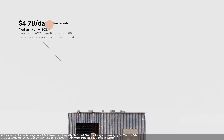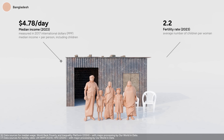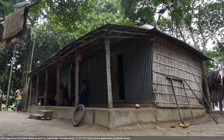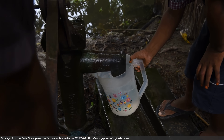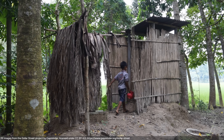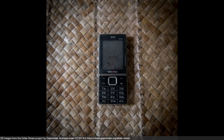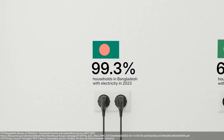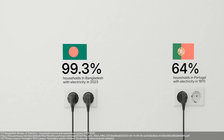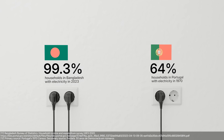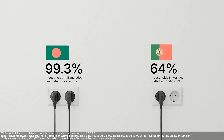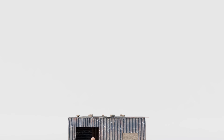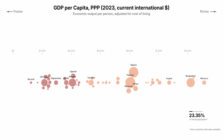Let's pick Bangladesh and see how people live there. The median income is $4.78 per day, and each woman has an average of 2.3 children. This family of five lives in a house with a metal roof. They have beds, access to a pipe well, a toilet, basic phones, and electricity — like more than 99% of households in Bangladesh. In Portugal, a high-income country, only 64% of the population had electricity as recently as 1970. In some aspects, Bangladesh is already more developed than the Portugal my parents grew up in.